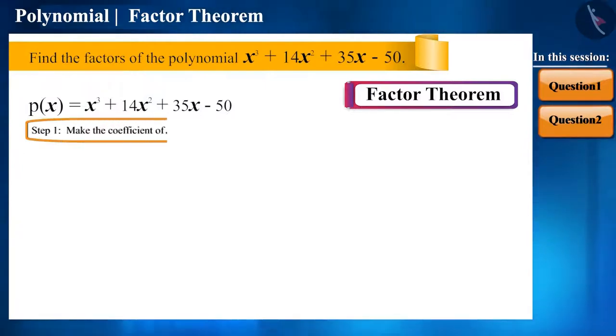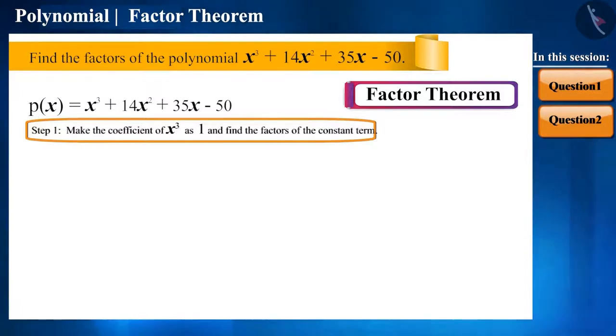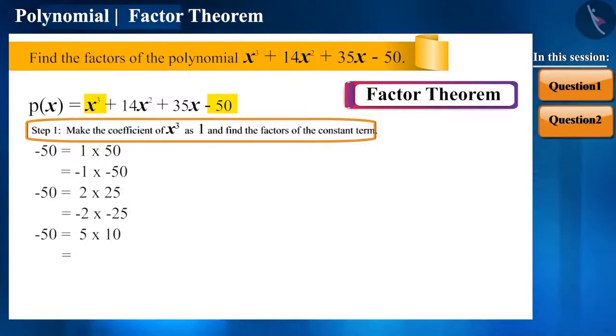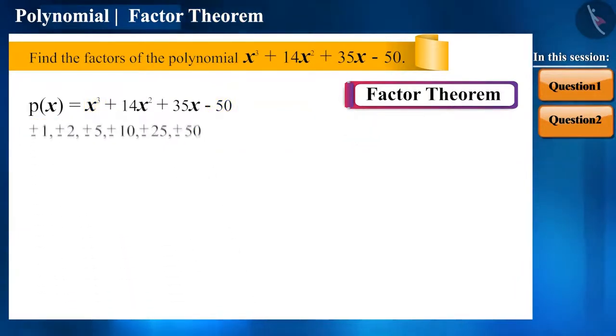The first step is to make the coefficient of x cube 1 and find the factors of the constant term. Here, the coefficient of x cube is 1 which means we have to find the factors of minus 50. And this is quite easy. We just have to make a list of those numbers with which minus 50 is completely divisible.